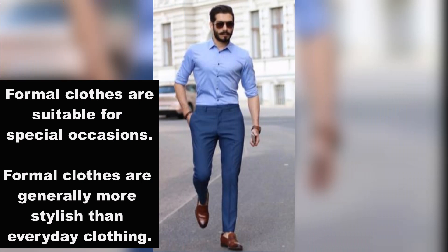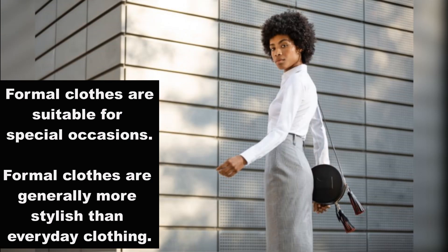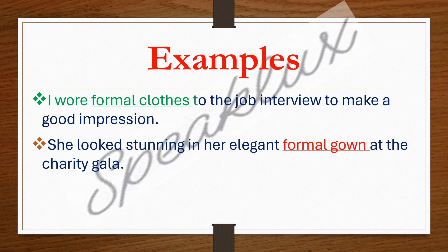On the other hand, formal clothes are those which are suitable for special occasions. These clothes are generally more stylish than everyday clothing. For example: I wore formal clothes to the job interview to make a good impression, or she looked stunning in her elegant formal gown at the charity gala. In these sentences I'm talking about a particular occasion — a job interview and a special charity event — so I use the word formal clothes.